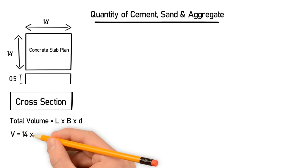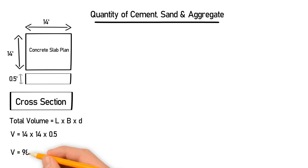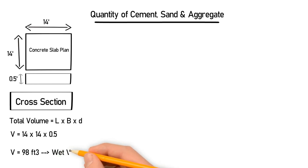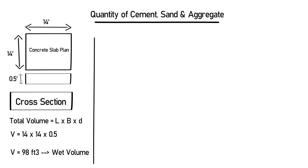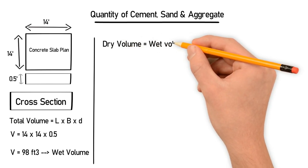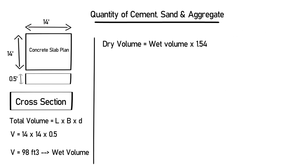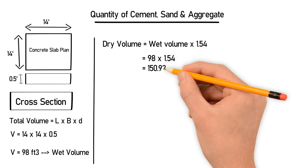The total volume of the slab V is equal to L multiplied by B multiplied by D. So the length is 14 multiplied by 14 multiplied by 0.5, giving a total wet volume of 98 cubic feet. To convert this to dry volume, we multiply by 1.54: dry volume equals wet volume multiplied by 1.54.